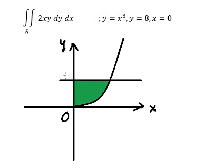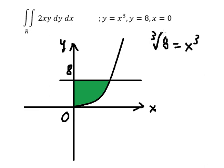We put number 8 in here to find this intersection. We take the cube root of both sides, and we get 2 equals x. So the number 2 goes in here.